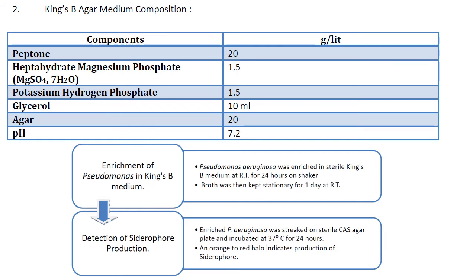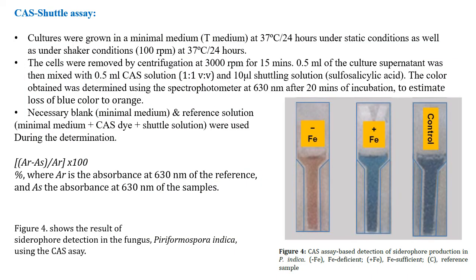For example, with a Pseudomonas culture: enrich it in King's B broth at room temperature for 24 hours on a shaker, then keep it stationary for one day at room temperature. Pseudomonas aeruginosa is then streaked on a sterile CAS agar plate and incubated at 37°C for 24 hours. You will then observe an orange to red halo, indicating siderophore production. This concludes the solid CAS medium method.